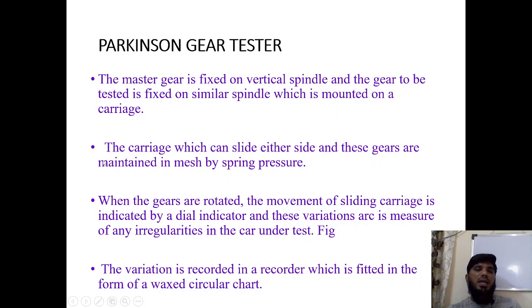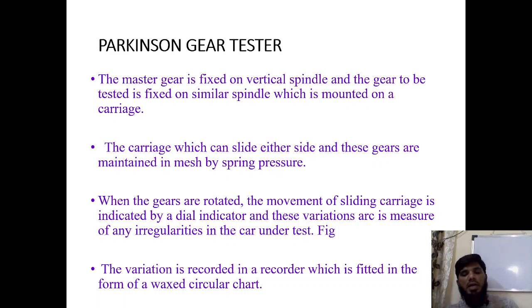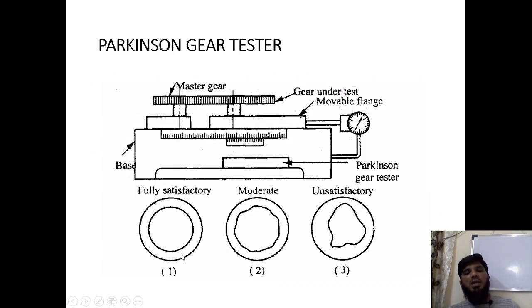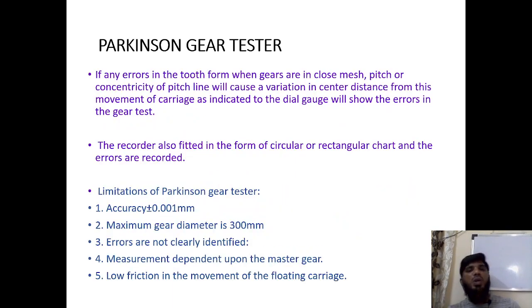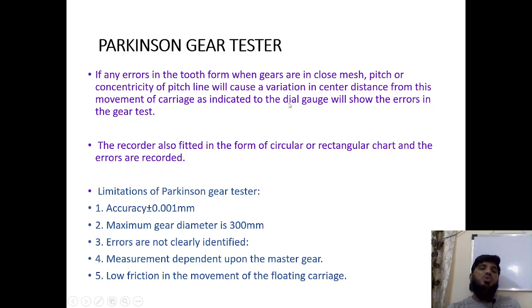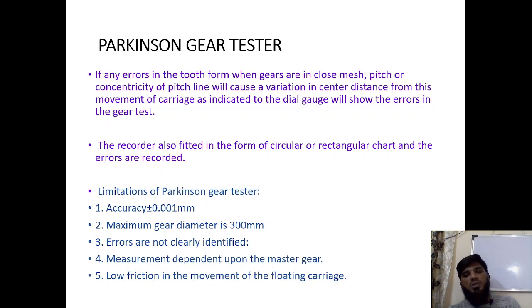The master gear is fixed on a vertical spindle and the gear to be tested is mounted on the carriage spindle. The gears are maintained in mesh by spring pressure. When rotating, movement of the sliding carriage is indicated by a dial gauge. If there are errors in tooth form, pitch, concentricity, or vibrations when gears are in closed mesh, these will be detected by the dial gauge.